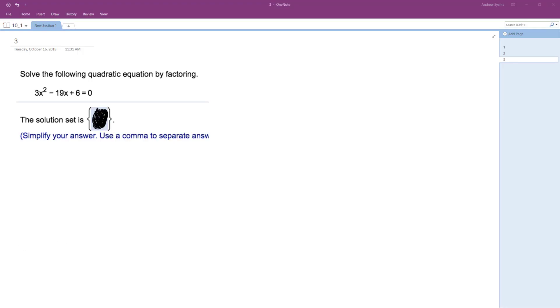All right, we want to solve the following problem using the quadratic formula. So the quadratic formula is the opposite of b plus or minus square root of b squared minus 4ac over 2a.